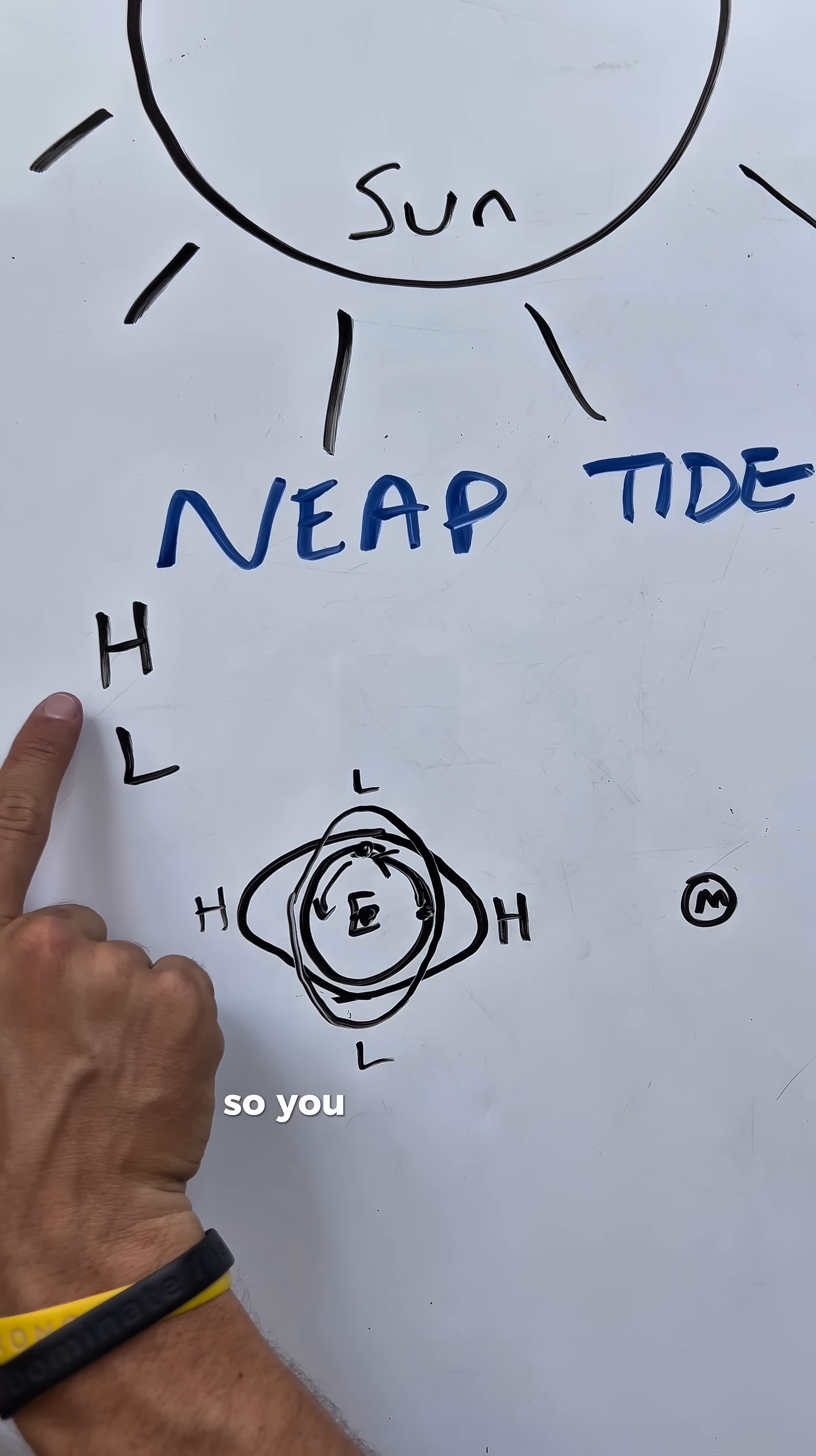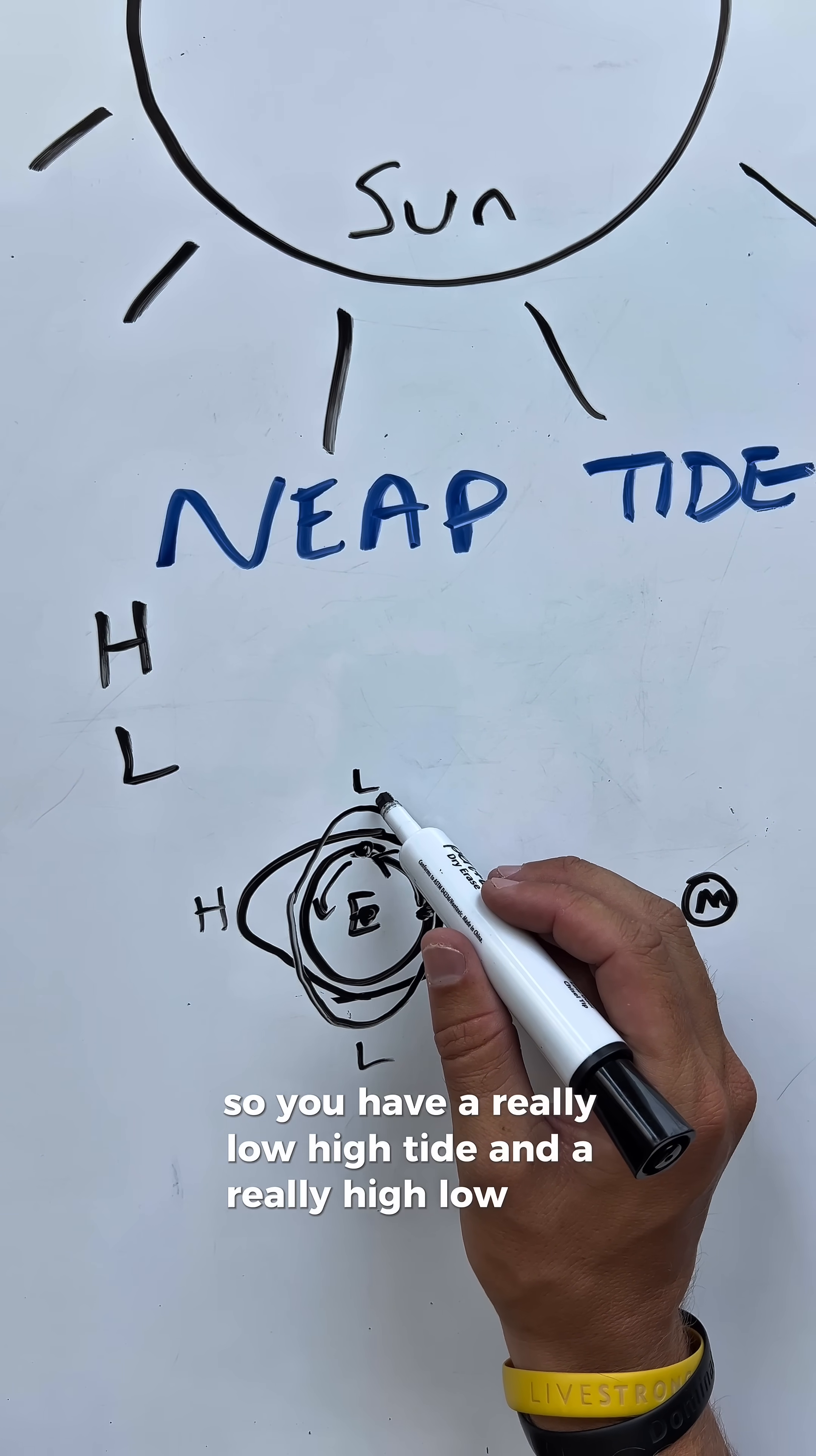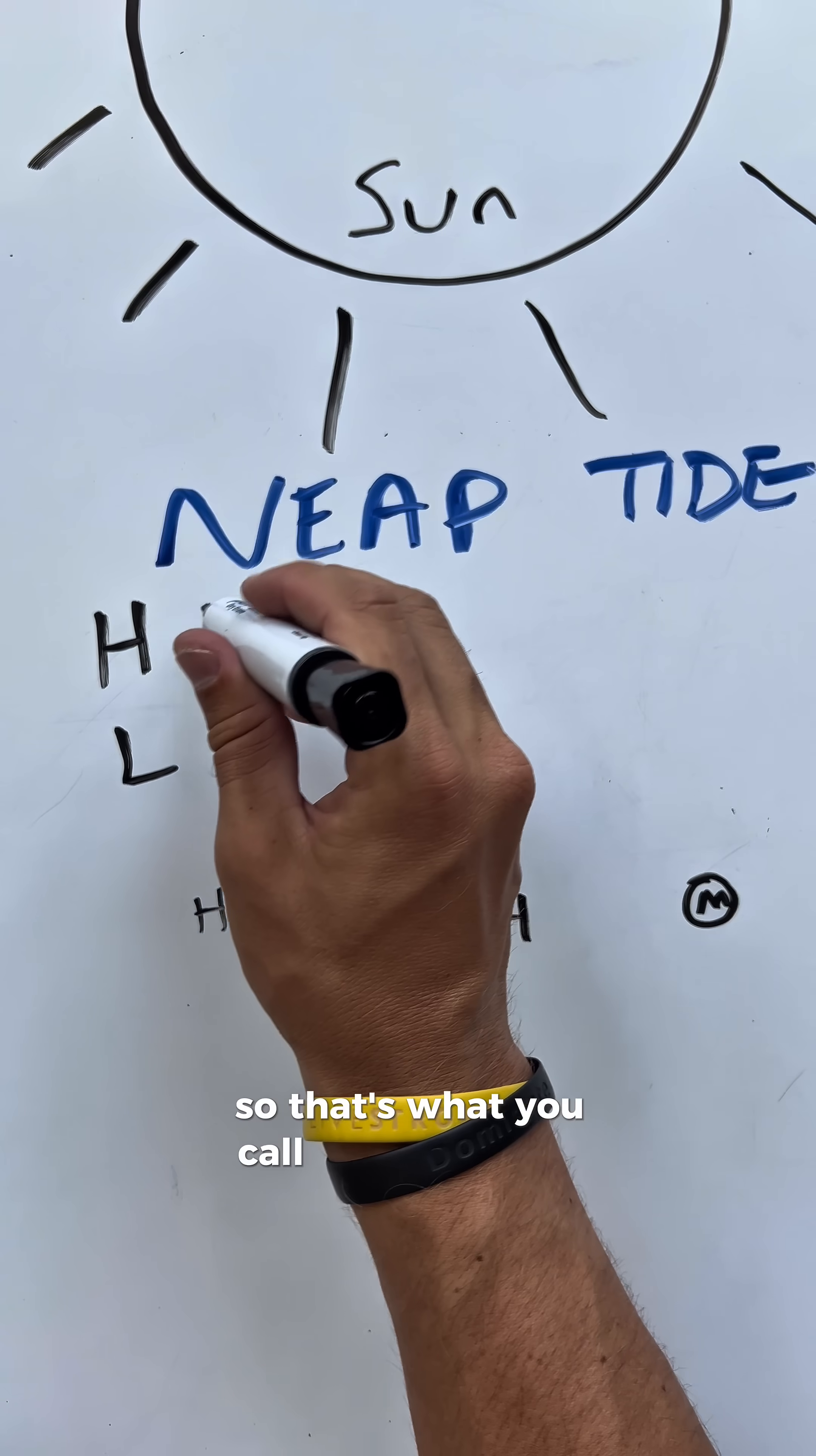So it averages out, so you have a really low high tide and a really high low tide. That's what you call a neap tide.